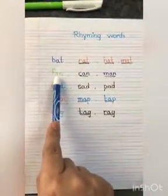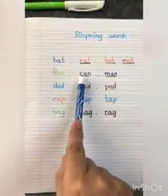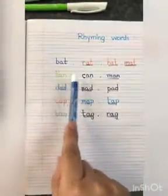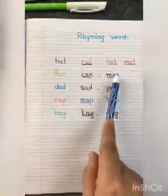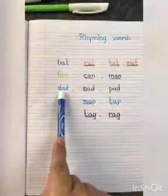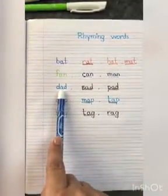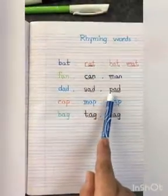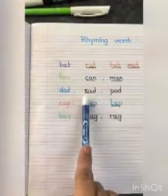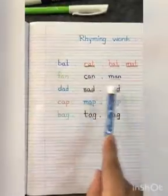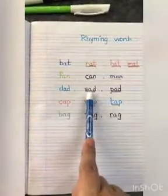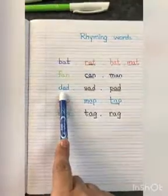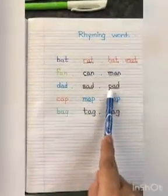What are the rhyming words of fen? Ken and men. Fen, ken, men. Next, dead — what are the rhyming words of dead? Sad and pad. Dead, sad, pad.